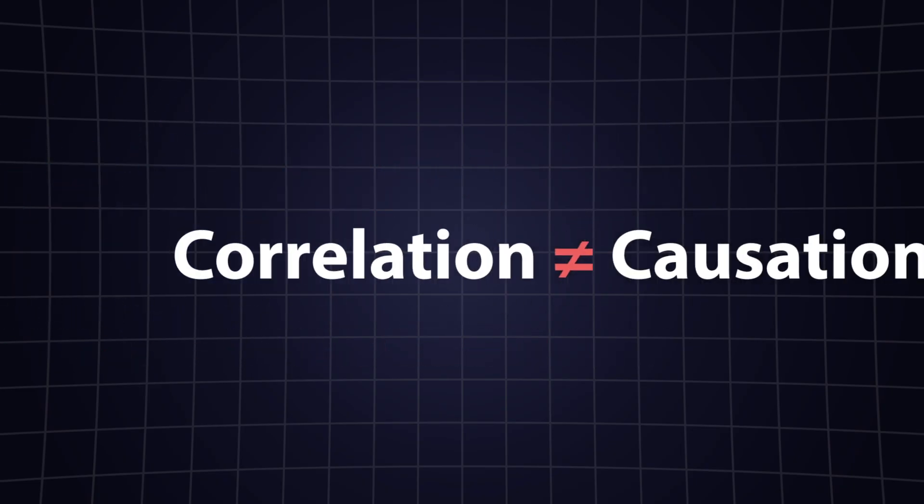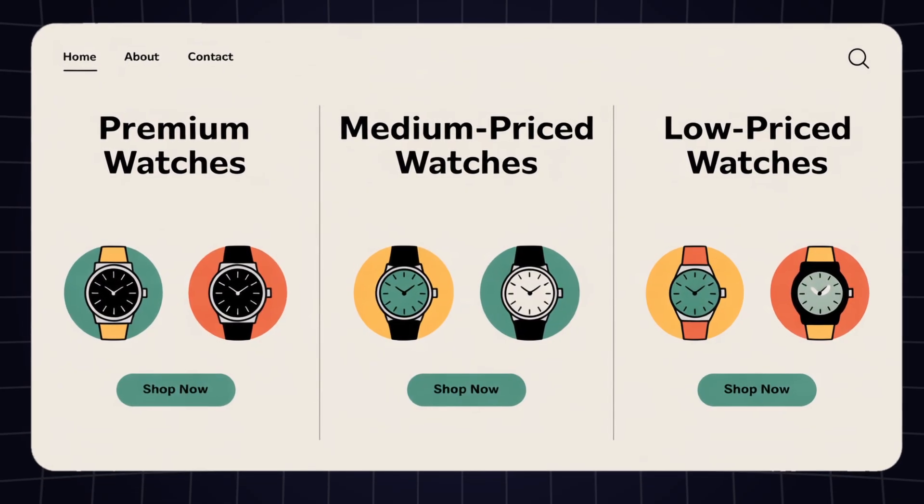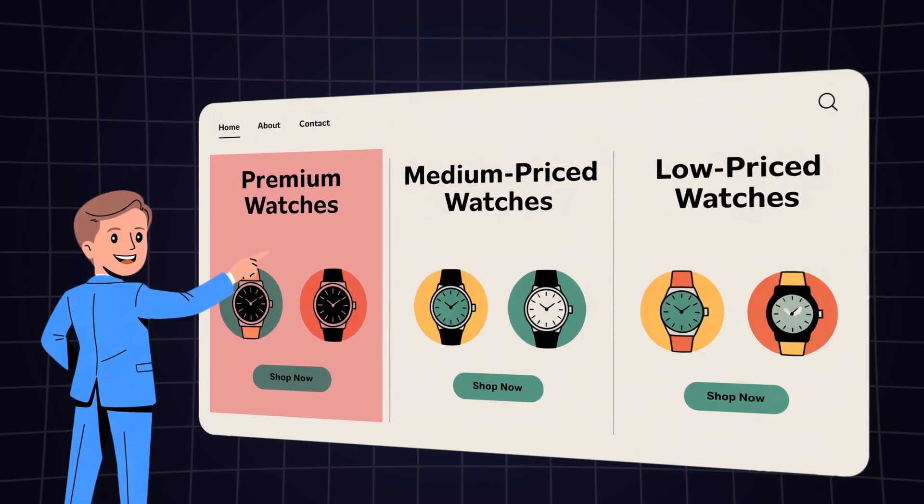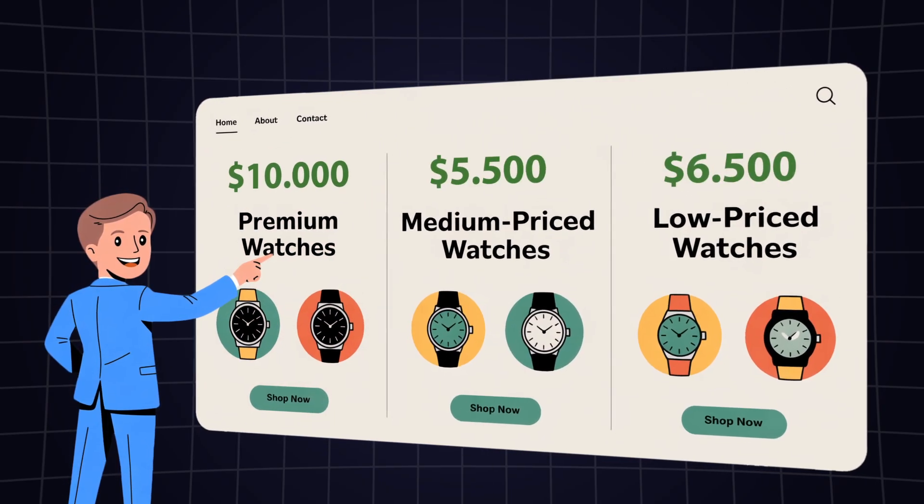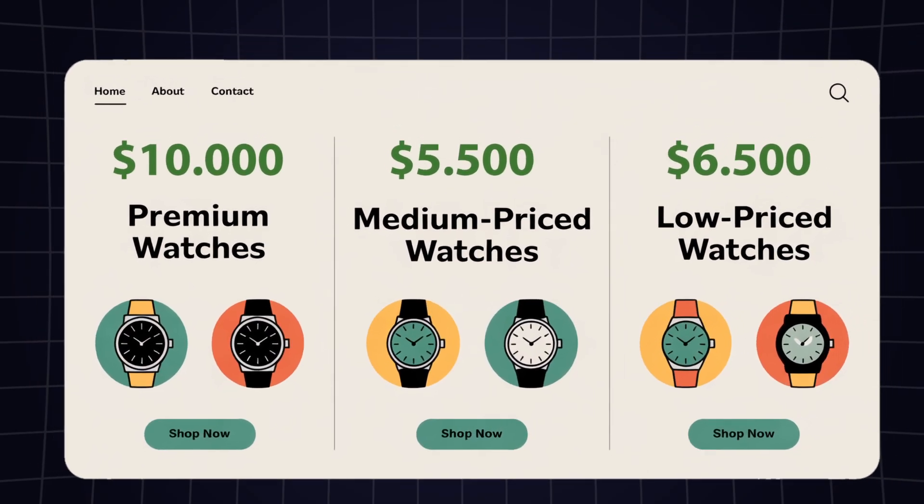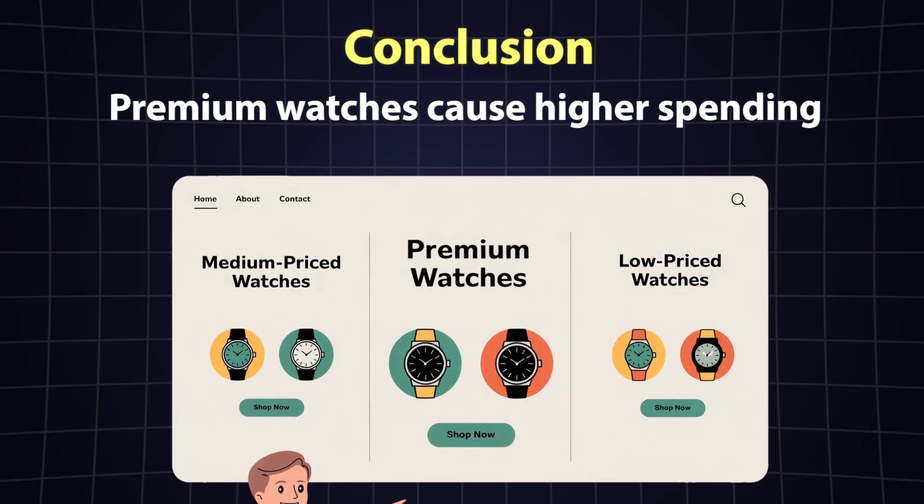In data science, confusing correlation with causation can lead to costly mistakes. Imagine you're working for an e-commerce company, and you discover that customers who browse the premium watches section tend to spend more overall. If you jumped straight to the conclusion that visiting this section caused higher spending, you might redesign the site to push more people there.